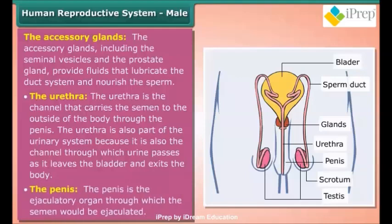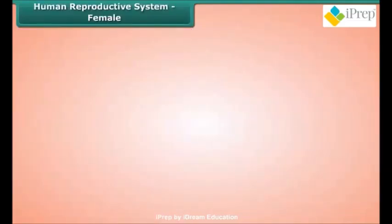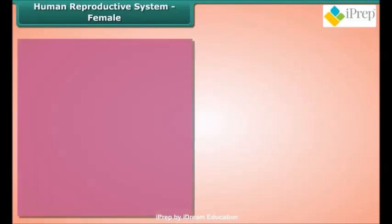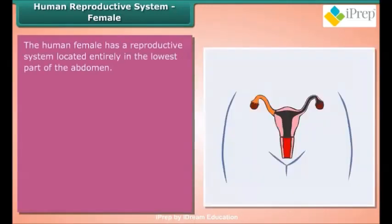The penis is the ejaculatory organ through which the semen is ejaculated.